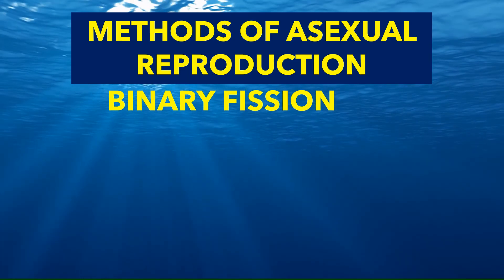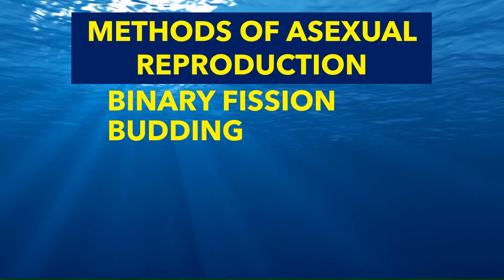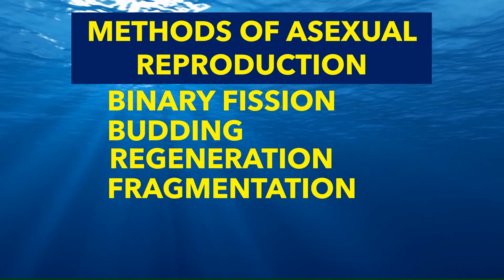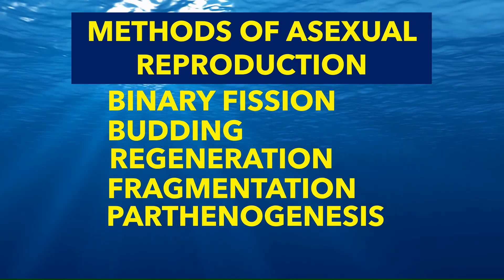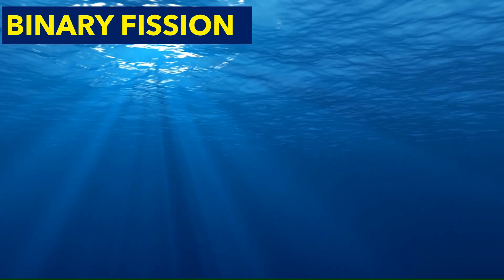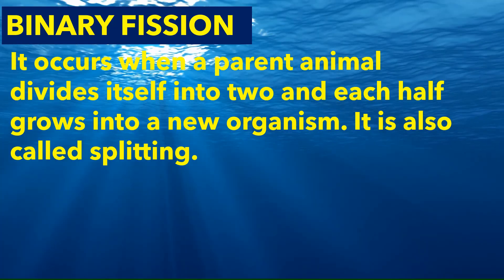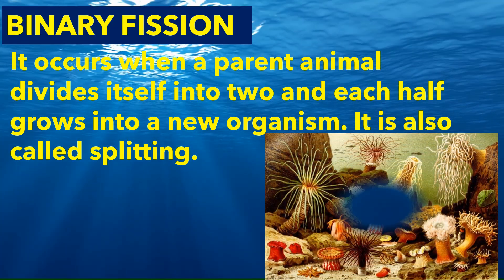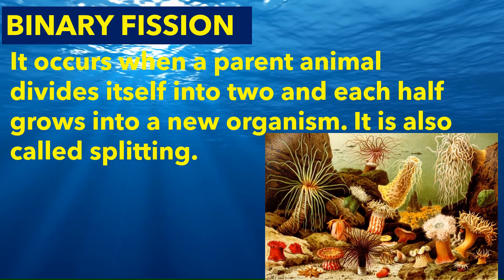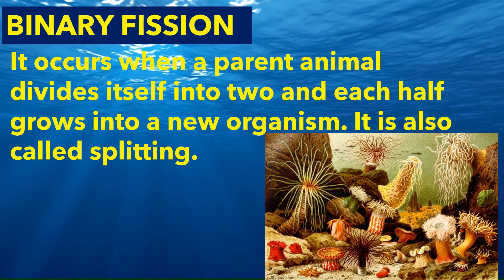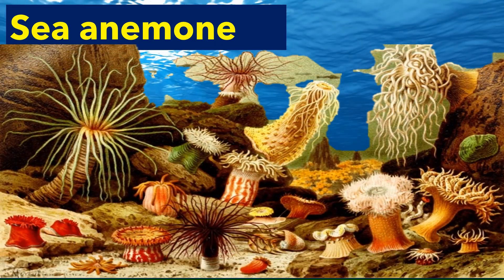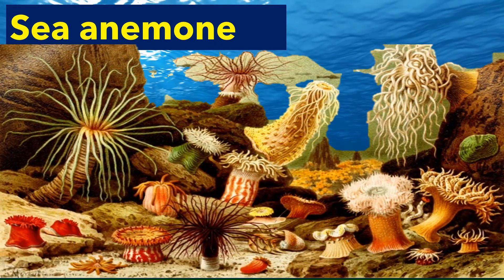Those are binary fission, budding, regeneration, fragmentation, and parthenogenesis. Binary fission occurs when a parent animal divides itself into two and each half grows into a new organism. It is also called splitting. An example of an animal which reproduces by binary fission is sea anemone.